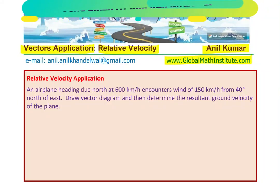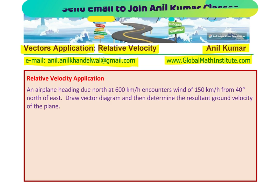In case you want to learn from me, you can send an email on the address given. Now, let us begin by understanding each part of this question. An airplane heading due north at 600 kilometers per hour. How do we represent this on a vector diagram? Let us try to see that first.